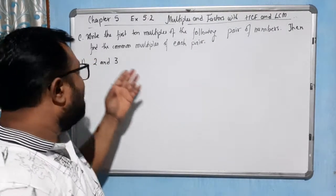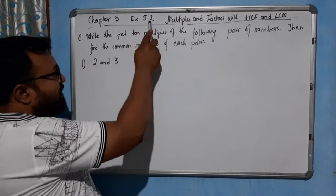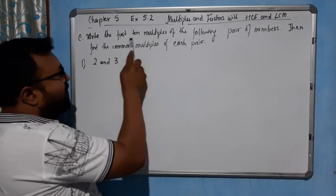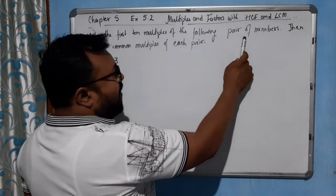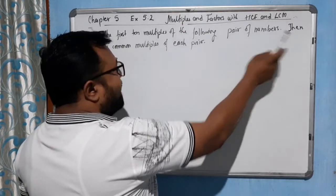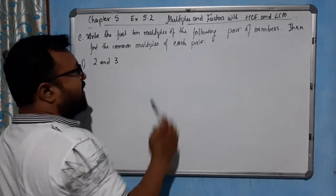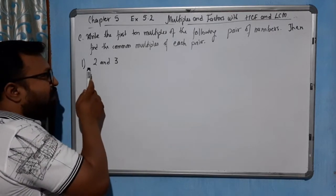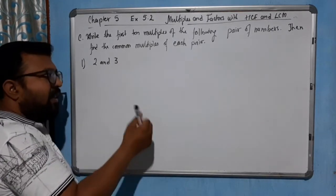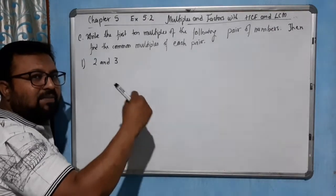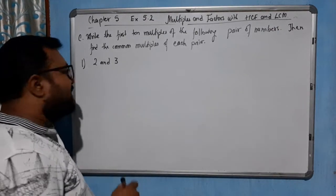Hello students, now come to the next question — Question C of 5.2: write the first 10 multiples of the following pair of numbers, then find the common multiples of each pair. First, we need to find the 10 multiples of 2, then of 3, and then we will try to find which multiples are common for both 2 and 3. See here.